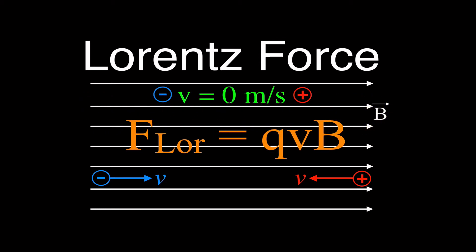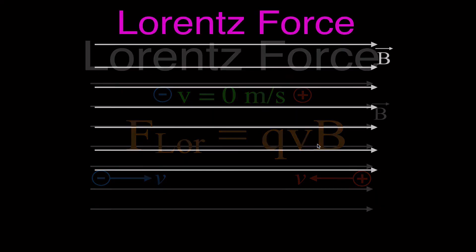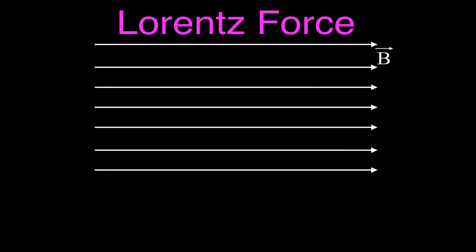What we're going to go over — two things in this video: what happens when we take a charged particle, negative or positive, and we put it in a magnetic field and just release it there. Also, what happens to a charged particle when it enters a magnetic field with some initial given velocity. This is the equation we're going to use for Lorentz force throughout this video.